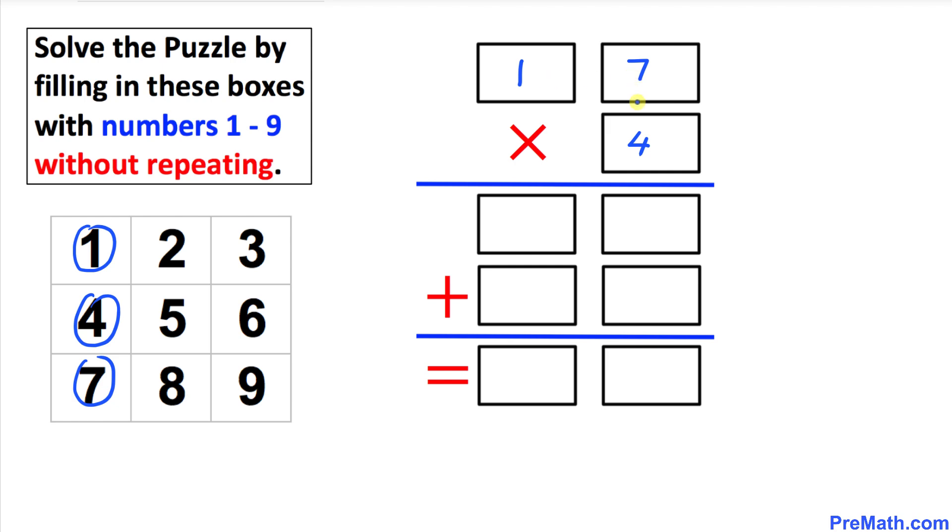Now let's look at this. 17 times 4 is going to give us 68, and since six and eight have been used up, let's go ahead and circle them.